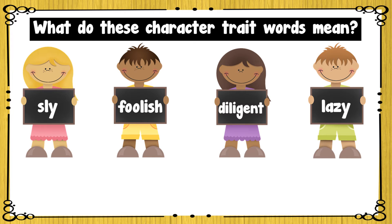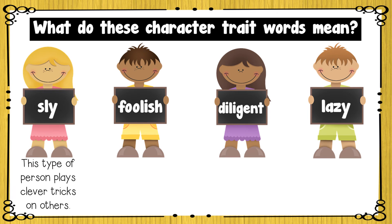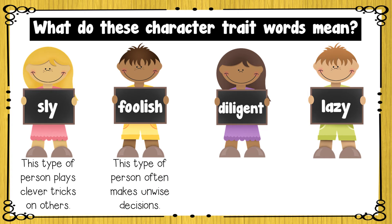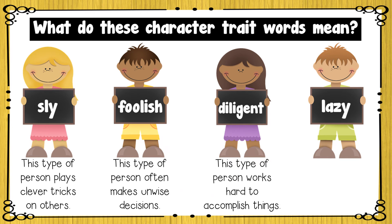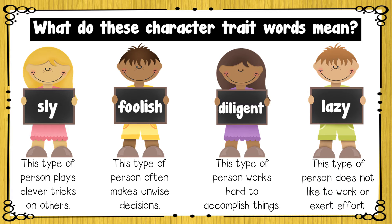What do these character trait words mean? Sly — this type of person plays clever tricks on others. Foolish — this type of person often makes unwise decisions. Diligent — this type of person works hard to accomplish things. And lazy — this type of person does not like to work or exert effort.